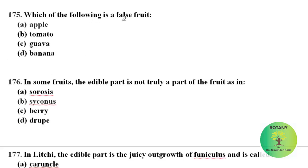Which of the following is a false fruit? A false fruit does not develop from the ovary — it develops from other parts. Apple develops from the thalamus and does not develop from the ovary, so it is among the false fruits.